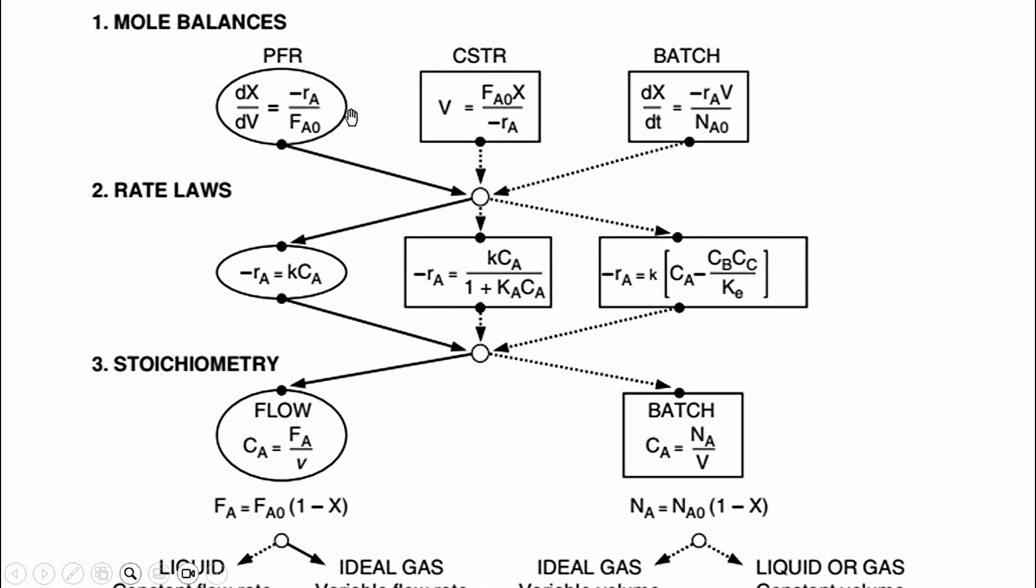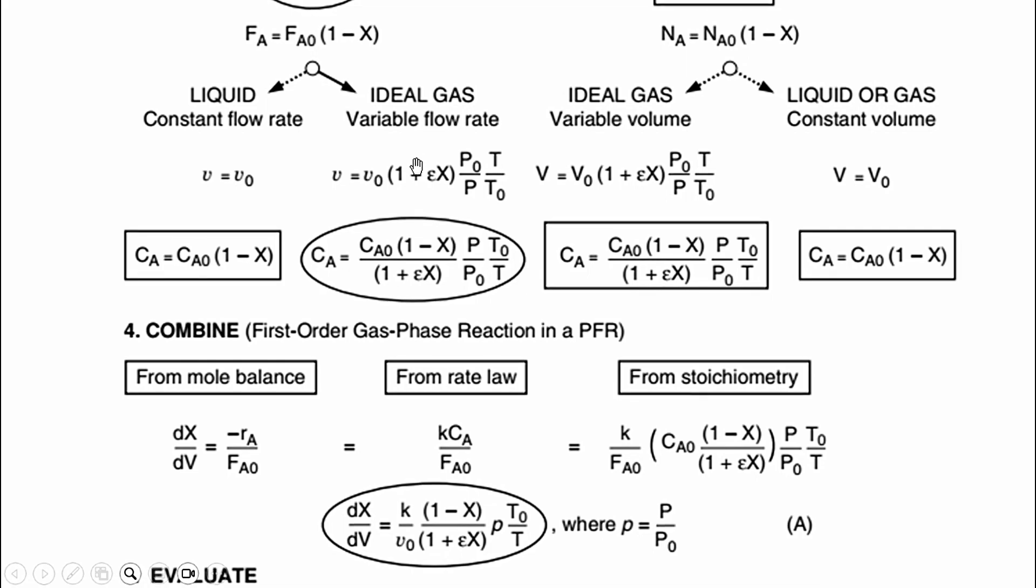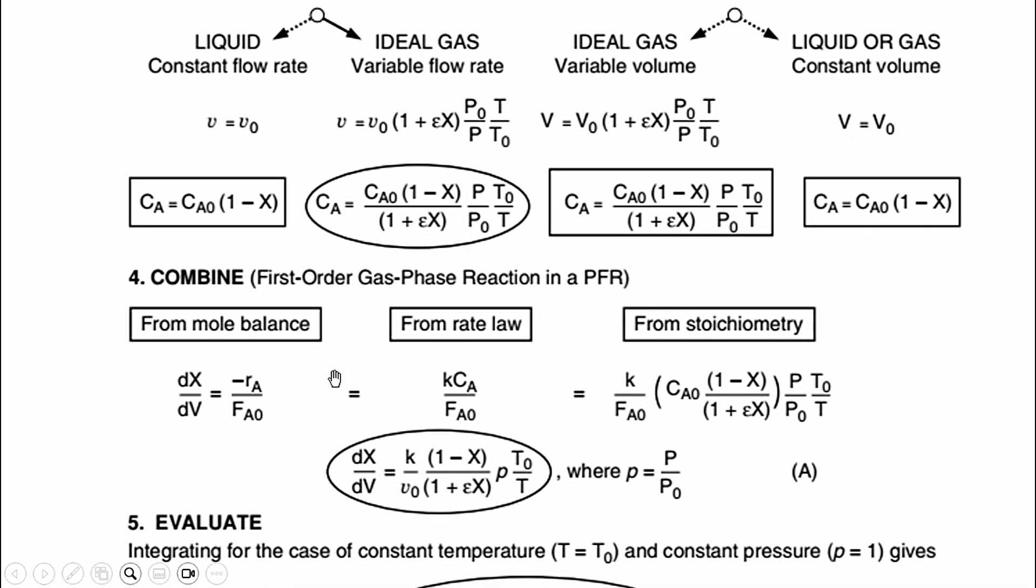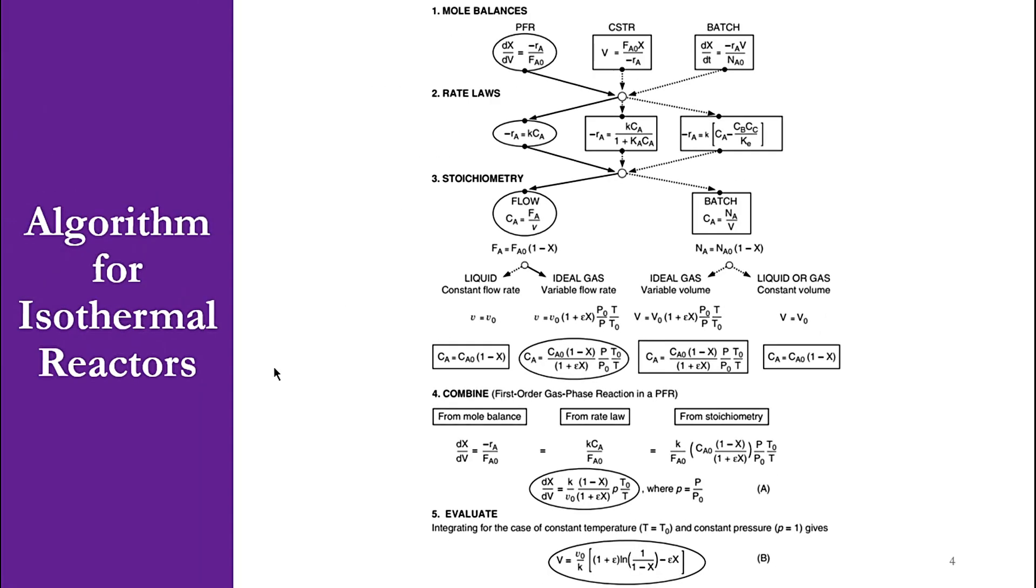Once we have done these three steps - written mole balance for the specific reactor, accordingly written the rate law, and using suitable stoichiometry equations - we have to combine all these three. From mole balance, from rate law, from stoichiometry, we get an ordinary differential equation which we have to evaluate. How can we evaluate? By integrating for the batch, PFR, or PBR. However, for CSTR it will be an algebraic equation, so it will be comparatively easier to solve. So these are the five steps: mole balance, rate law, stoichiometry, combine, and evaluate.